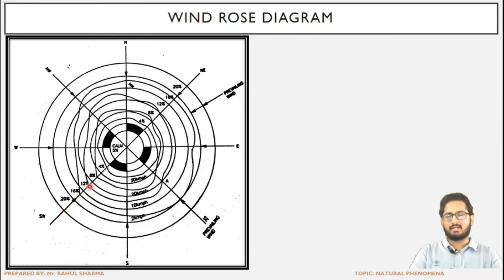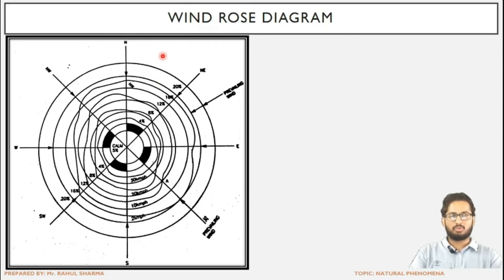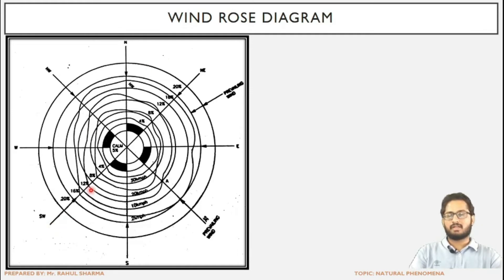The concentric circles are representing the duration or frequency. Among the three parameters, we are aware about the direction and we are aware about the intensity or speed. The new thing is the duration or frequency, which is given in percentage.